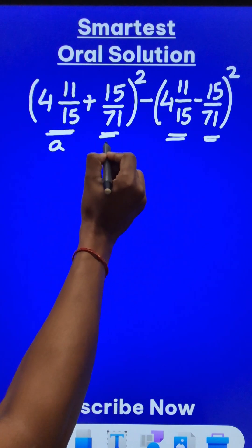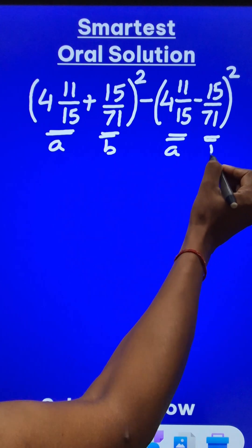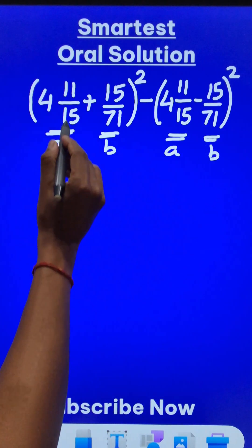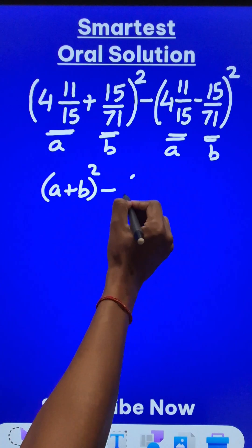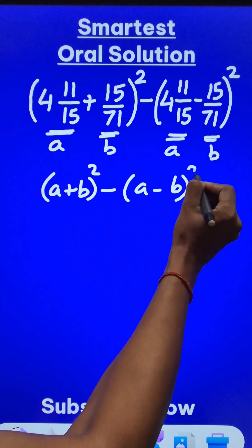So let's assume that this is a and this is b. Likewise, this is a and this is b. So what is the question statement? It is a plus b whole square minus a minus b whole square.